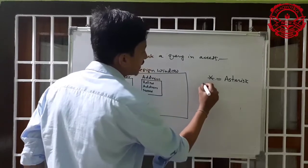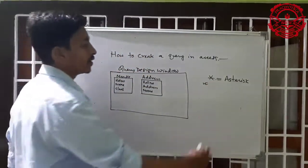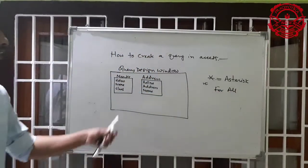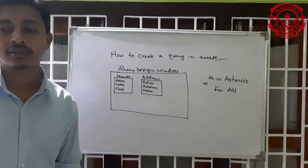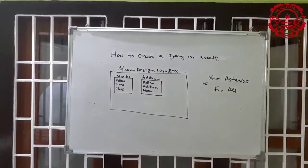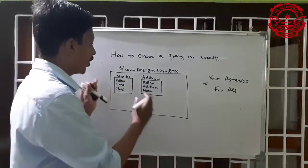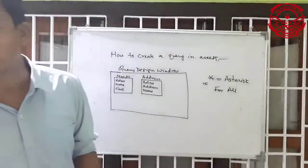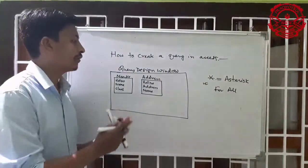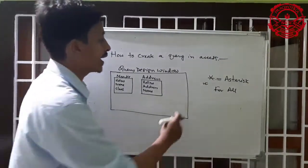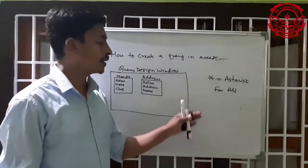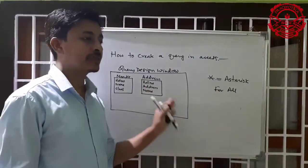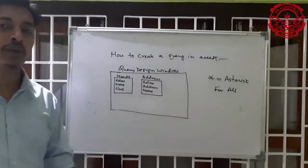When you select the asterisk symbol, it means you want all the columns included in the query grid. You can also select a particular or specified column — whatever you want. For example, you can type the name, class, and address fields that you want.